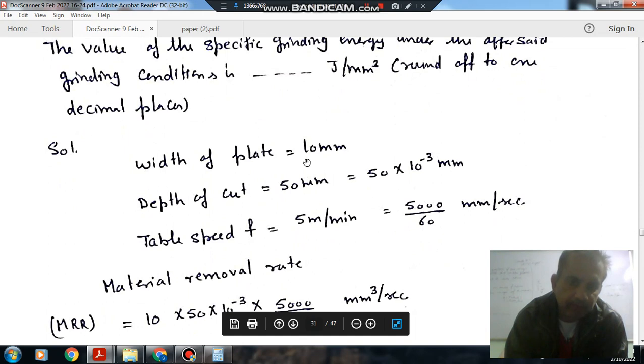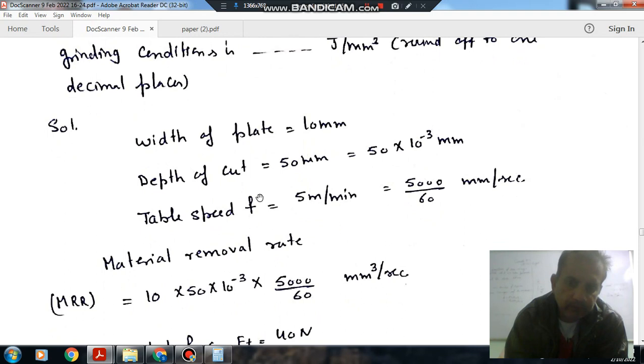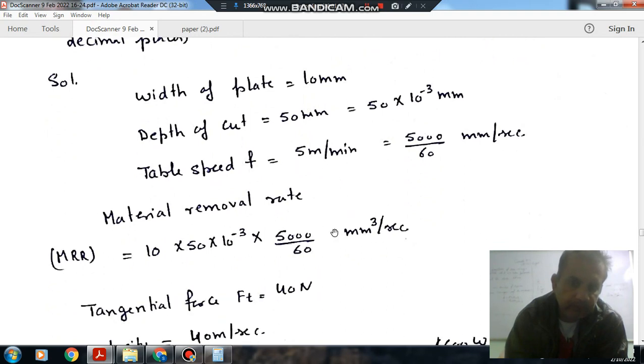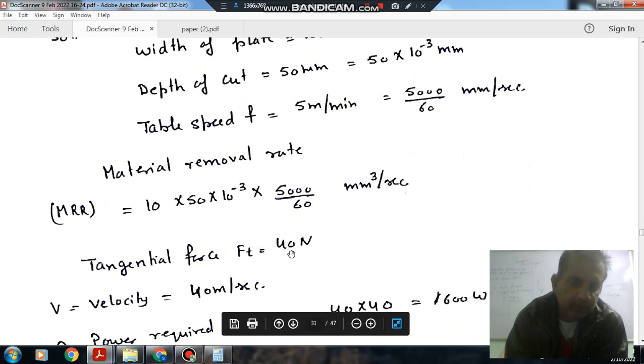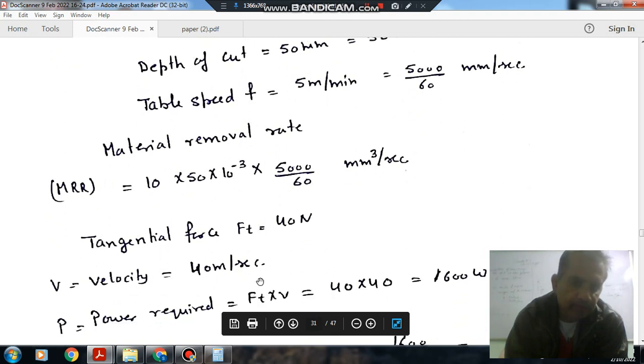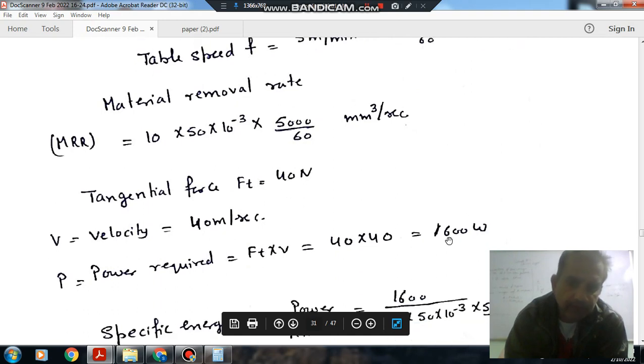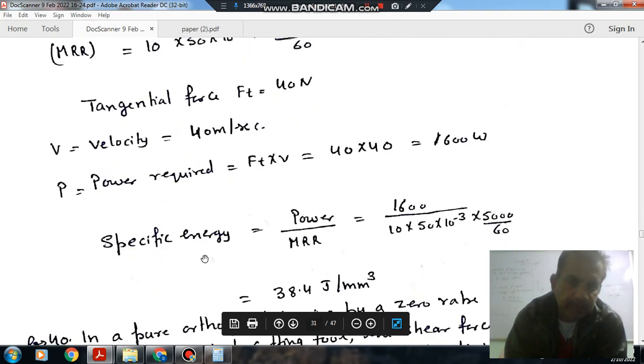The metal removal rate will be your width of cut, depth of cut into the speed of table. Width is 100, depth is 50 times 10 to the minus 3, speed is 5000 by 60. Metal removal rate is calculated and specific energy is nothing but power divided by metal removal rate.